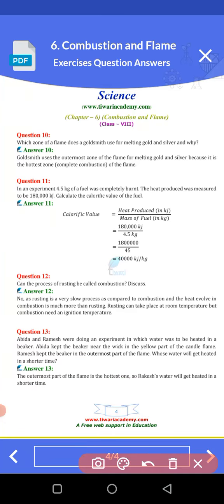This is the outermost zone of the flame. Goldsmiths use this outermost zone of the flame to melt gold and silver because it is the hottest zone.